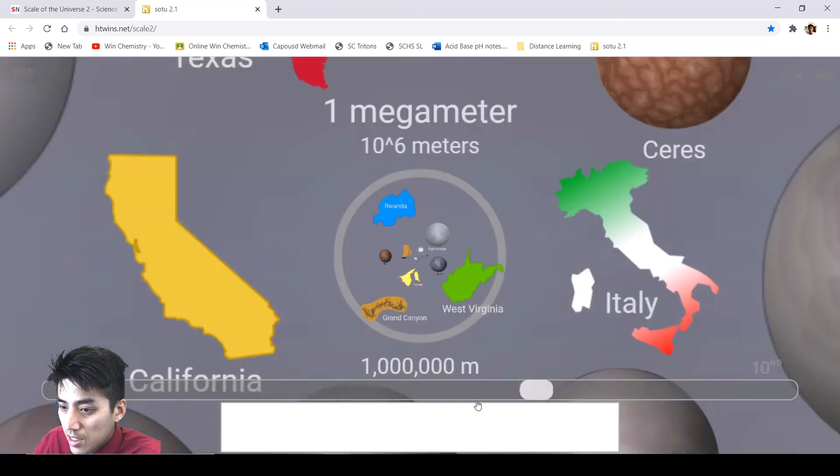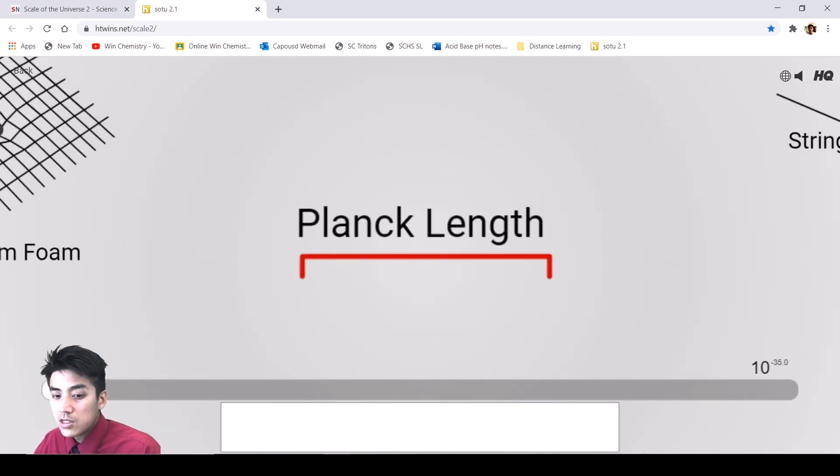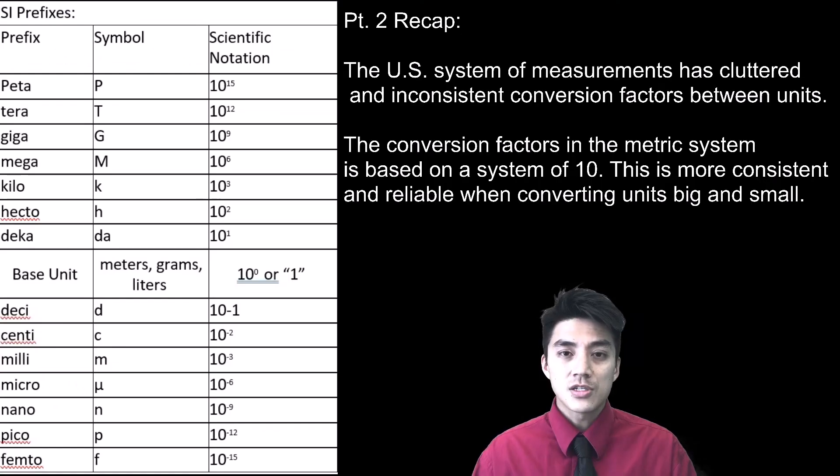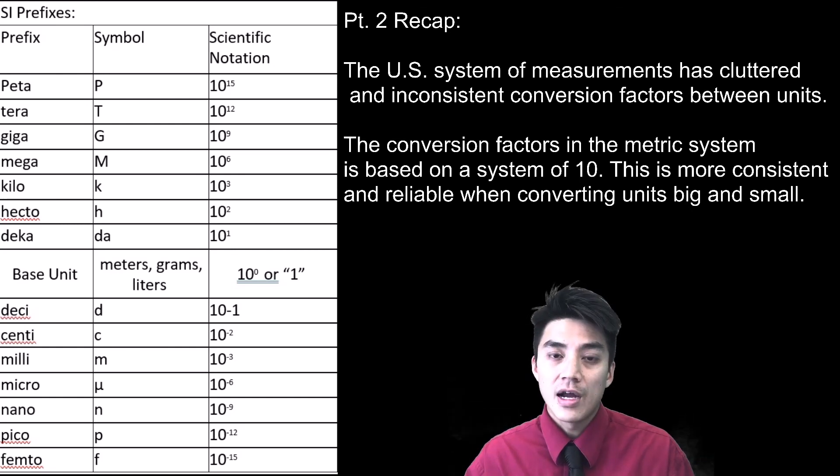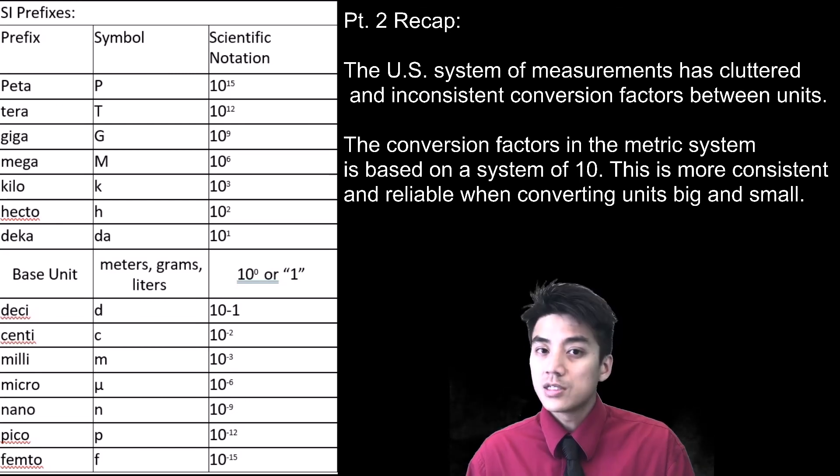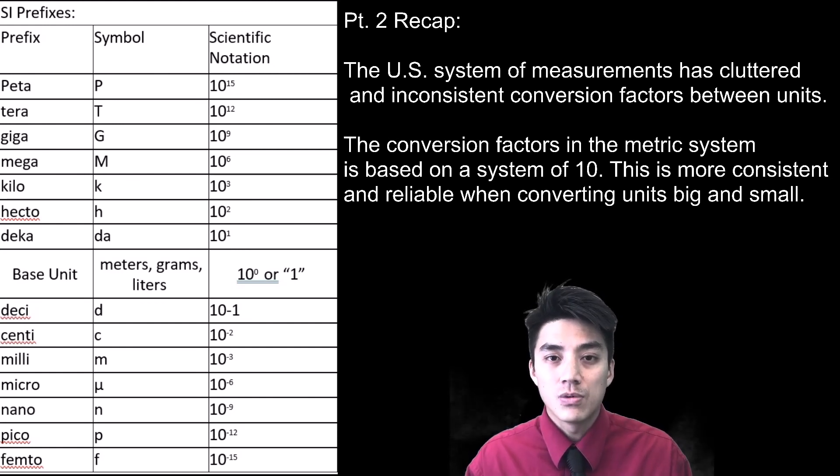So going from big to small again, just real fast. And we're going to go all the way until the end. But the point is, there are different prefixes and units that allow us to describe these lengths, whether they're really big or really small. And that's the beauty of the metric system. So just to recap, the U.S. has a system of measurements that is cluttered. And it's confusing because the conversion factors are inconsistent. And with the metric system, you just have to know that it's based on a power of 10. Much like how the Richter scale describes the power of earthquakes, every step represents a tenfold increase. It's not that cut and dry in the metric system, but it still is based on the power of 10. So you're going 10, 100, 1,000, 10,000, 1,000,000, so on and so forth. So in part three, I'll teach you how to convert these metric units. I'll see you there and we'll win some more chemistry.